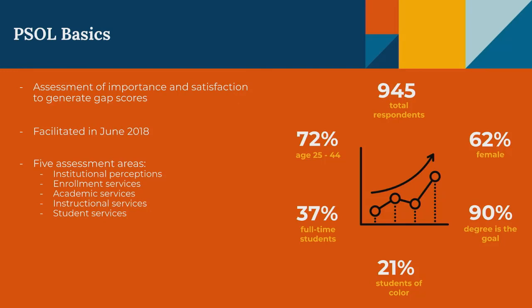The Ruffalo Noel Levitz Priority Survey looks at both importance and satisfaction, providing us a gap score. If something is really important to students but satisfaction is low, that's something we want to address to increase positive experience at OSU and hopefully improve retention. We facilitated it last June and reported out program-level data to all our majors last fall and through the winter, providing it to associate deans, department heads, and advisors.